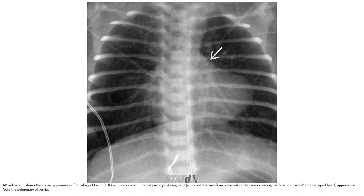This is the AP chest radiograph showing the classic appearance of the boot-shaped heart, with a concave pulmonary artery segment and an upturned cardiac apex, creating the classic coeur en sabot boot-shaped appearance. Note the pulmonary oligemia.